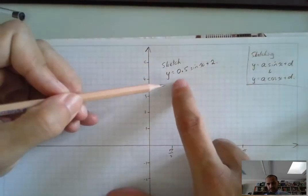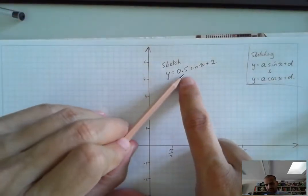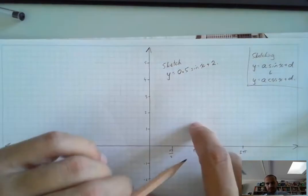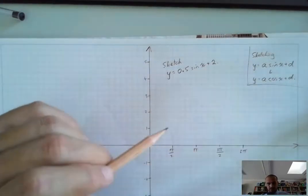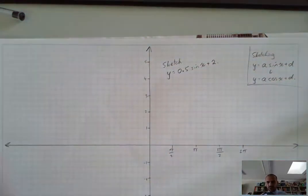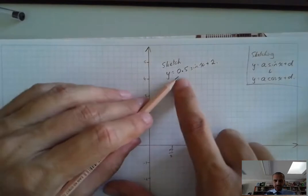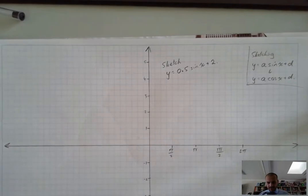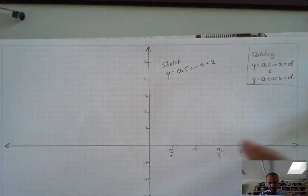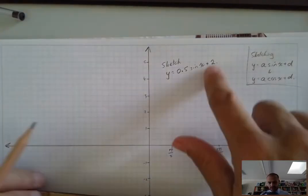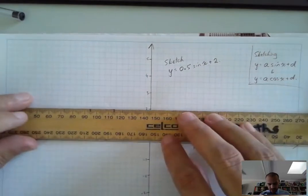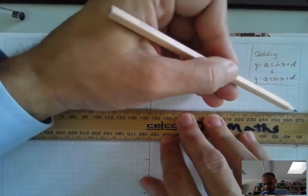Here's the function I'm going to sketch: y equals 0.5, or half, sin x plus 2. It's that plus 2 that changes the game for us here. I'm also using 0.5, which is going to squash down our function rather than stretch it. The d value is positive 2 and it creates a new center for us.